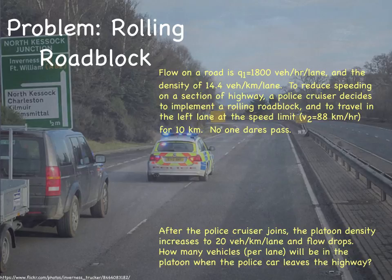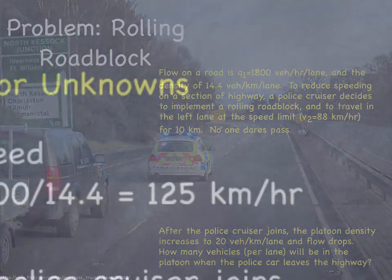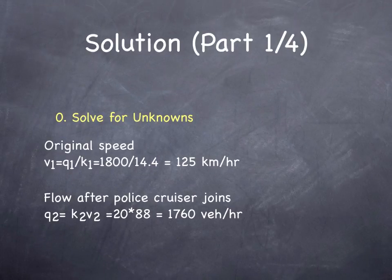Pause the video. Solve the problem. The first step, solve for the unknowns. You were given Q1 and K1 in this example. Solve for V1. Q1 is 1,800 vehicles per hour. K1 is 14.4 vehicles per kilometer. V1 is 125 kilometers per hour.